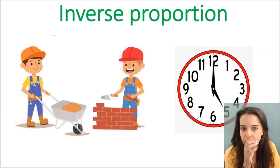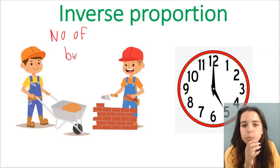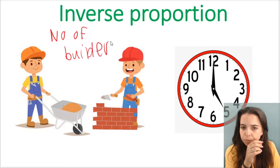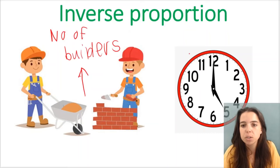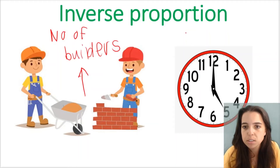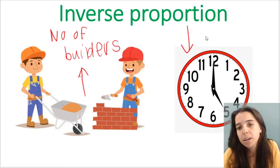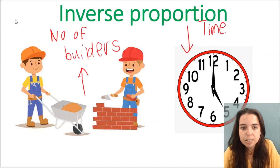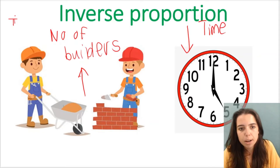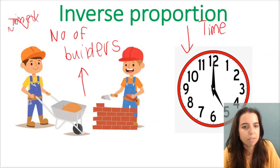So, for example, I've got number of builders building a house. If I increase the number of builders building my house, what will happen to the time it takes to build the house? Well, the time — let's say in hours or in days — the time it takes to complete that job will decrease. So inverse proportion is simply: as the one variable increases, the other variable decreases. They do the opposite.